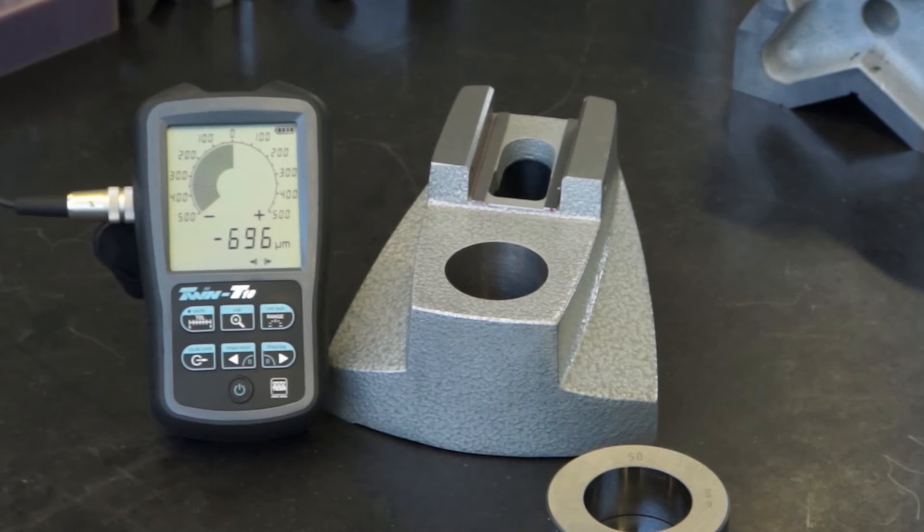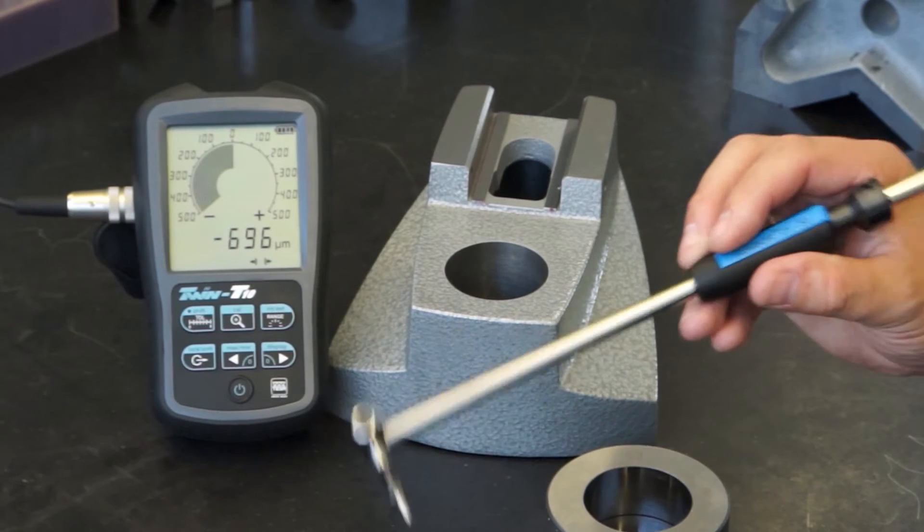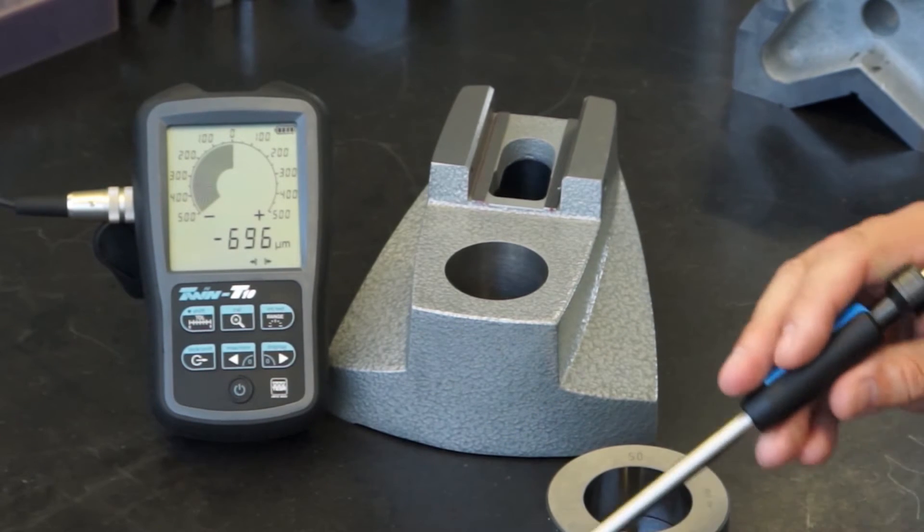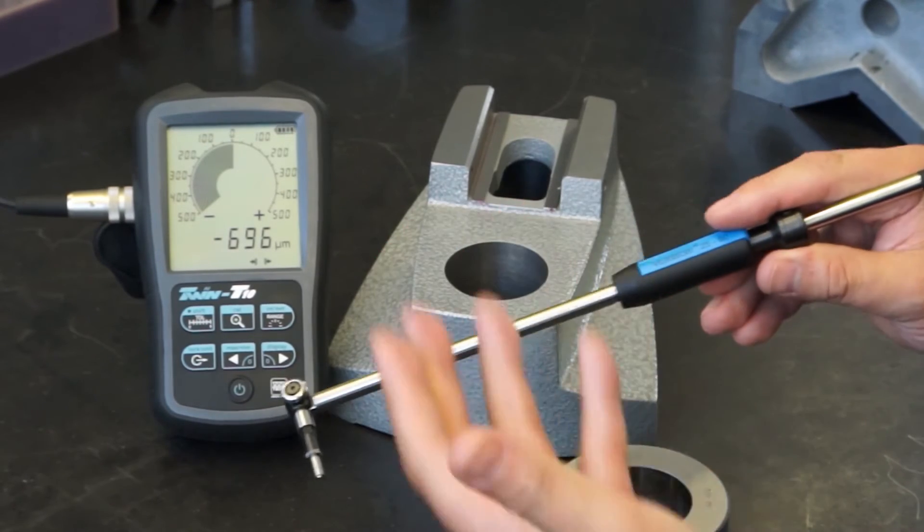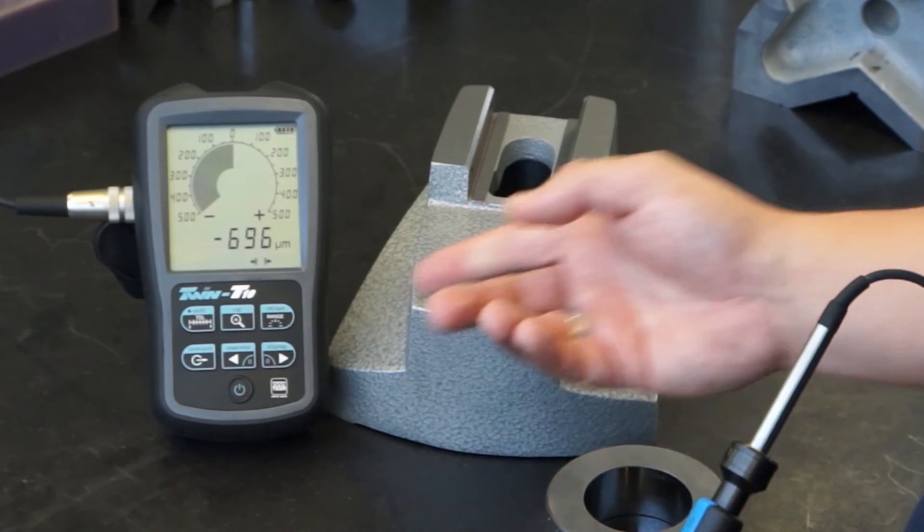Hi. We will show you how easy it is to accurately measure an internal diameter with the TWIN T10, used in combination with a Vari-Bore two-point measurement gauge and a GT21 pencil probe.